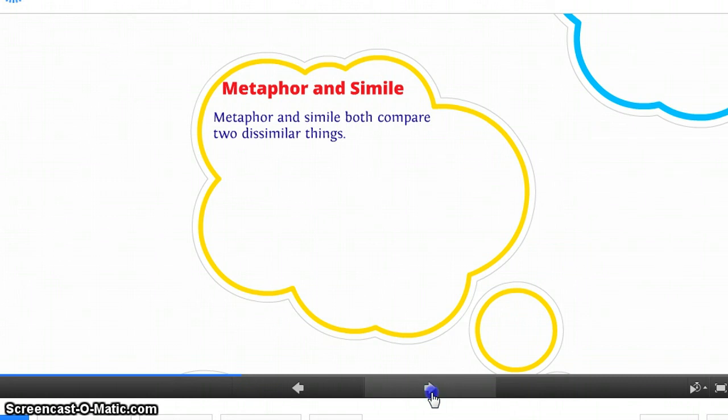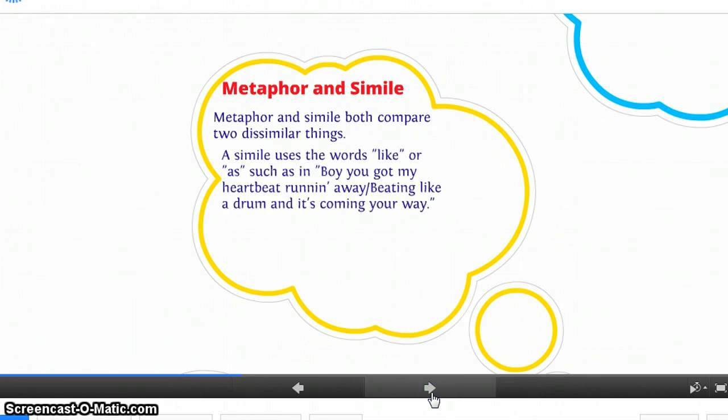Now, the difference between metaphor and simile, a simile uses words like like or as. So an example of that is, boy, you got my heartbeat running away, beating like a drum and it's coming your way. So this like here is what makes it a simile. In this example, Nicki Minaj is saying that her heart is beating like a drum, and it's explaining how she feels when she sees this guy.